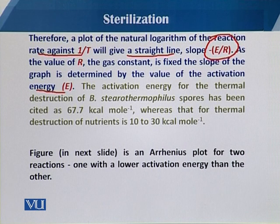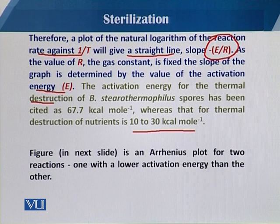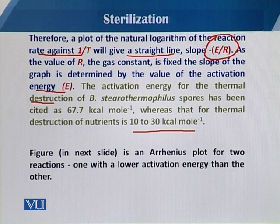The activation energy for the thermal destruction of Bacillus stearothermophilus spores has been cited in literature as 67.7 kilocalories per mole, whereas the thermal destruction of nutrients is 10 to 30 kilocalories per mole. Bacillus stearothermophilus is known as the indicator organism for the sterilization process — it is used to check whether the media has been properly sterilized. Its thermal destruction energy is 67.7 kcal/mol, compared to 10 to 30 for nutrients depending on the component.